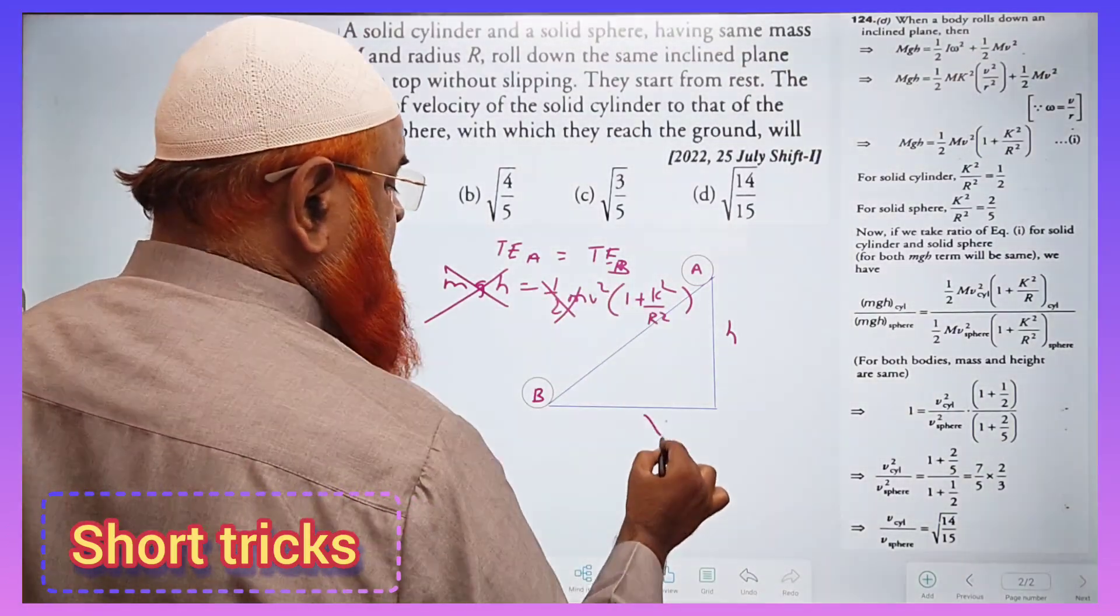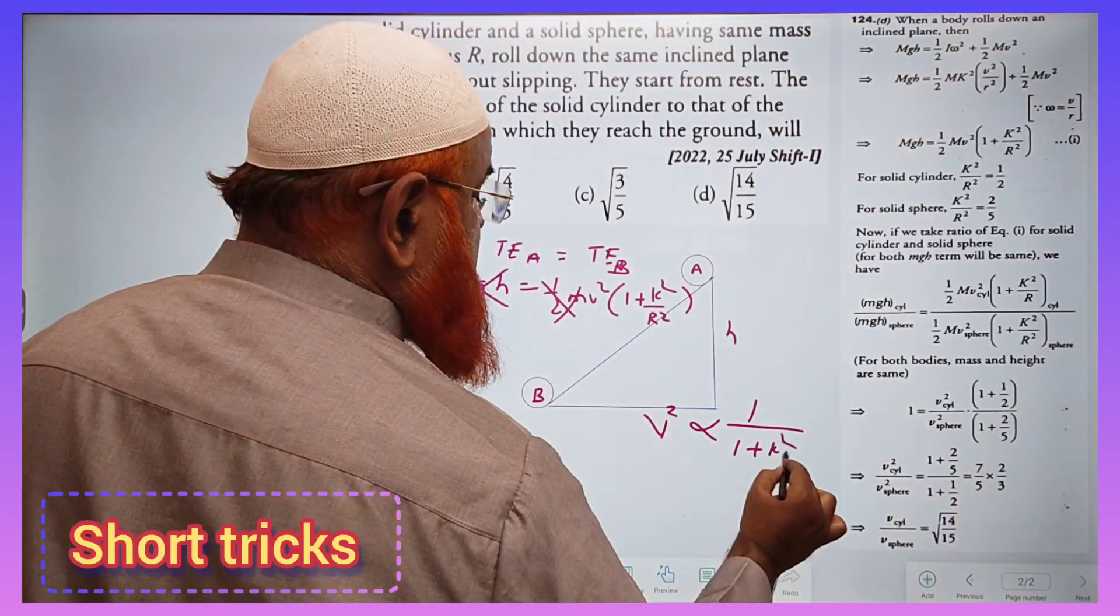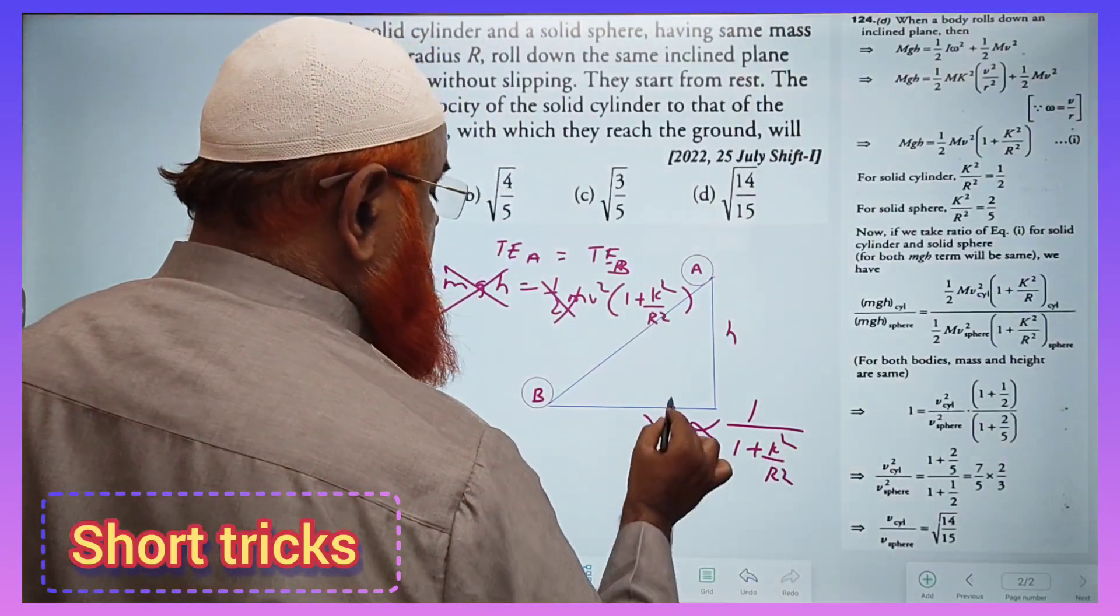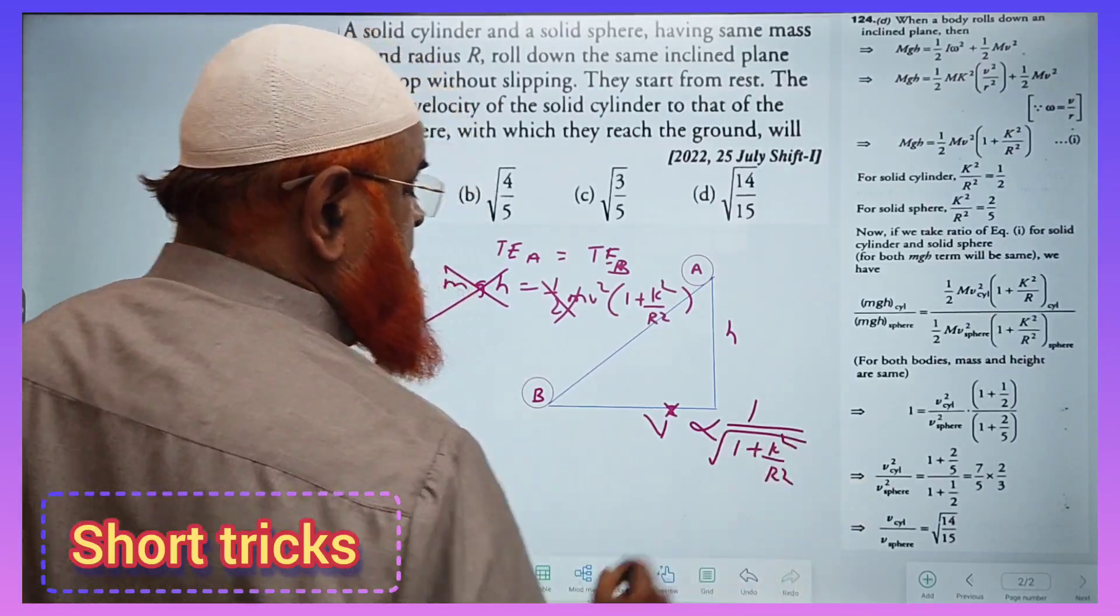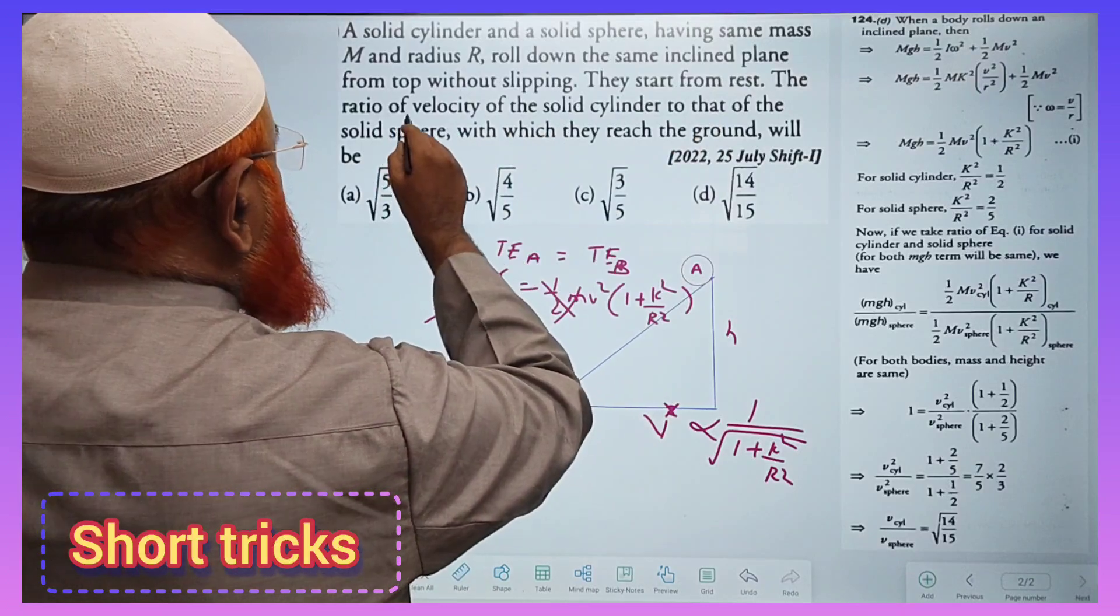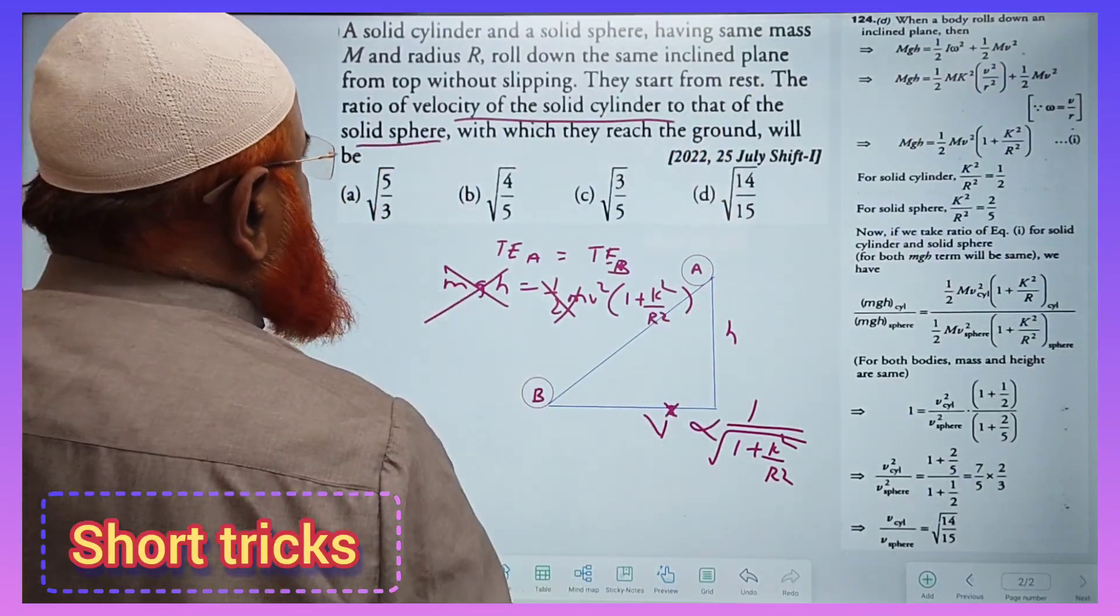So from this it is understood that v² is inversely proportional to 1 plus k²/r². That means you can remove the velocity and write the velocity here. Okay and he is asking us to find out the ratios of velocities of solid cylinder to that of a solid sphere.